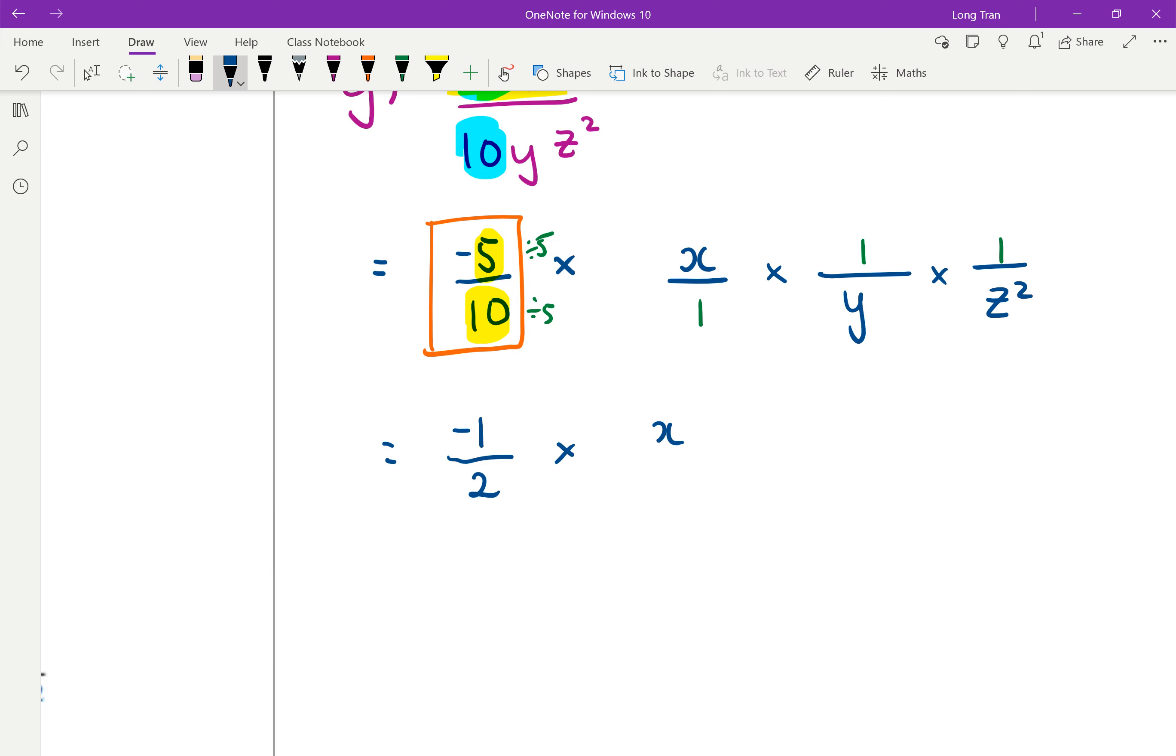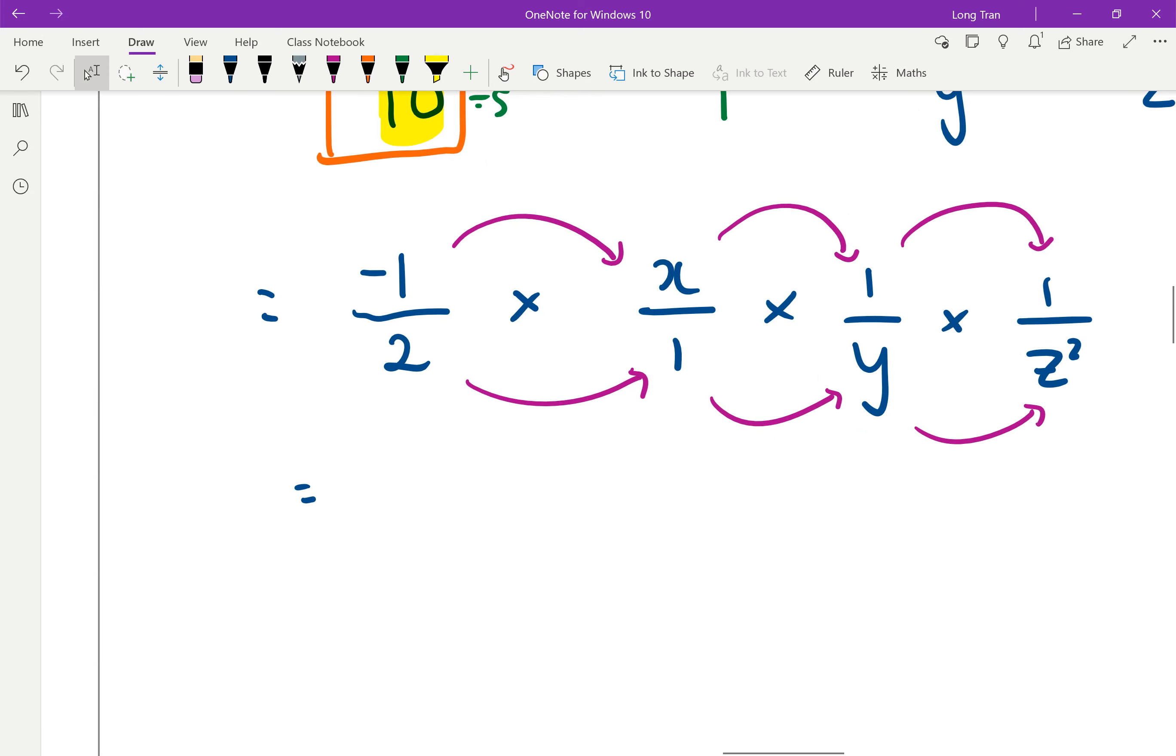Now this is all being multiplied to x over 1 times 1 over y times 1 over z squared. Now I know it looks intimidating, but remember with multiplications of fractions, you simply multiply top with top, and then bottom with bottom. And even though it looks intense, really, I'm only asking what is negative 1 multiplied to x, multiplied to 1, multiplied to 1, which we know is just going to be negative x itself.